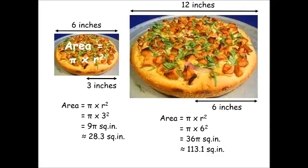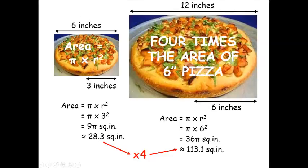The radius of a 12 inch pizza is 6 inches, so its area is π times 6 squared, which is 36π square inches, or about 113.1 square inches. Try it on your calculator now. That's 4 times the area. I should ask for 4 six inch pizzas for the price of 1 twelve inch then. What do you reckon?